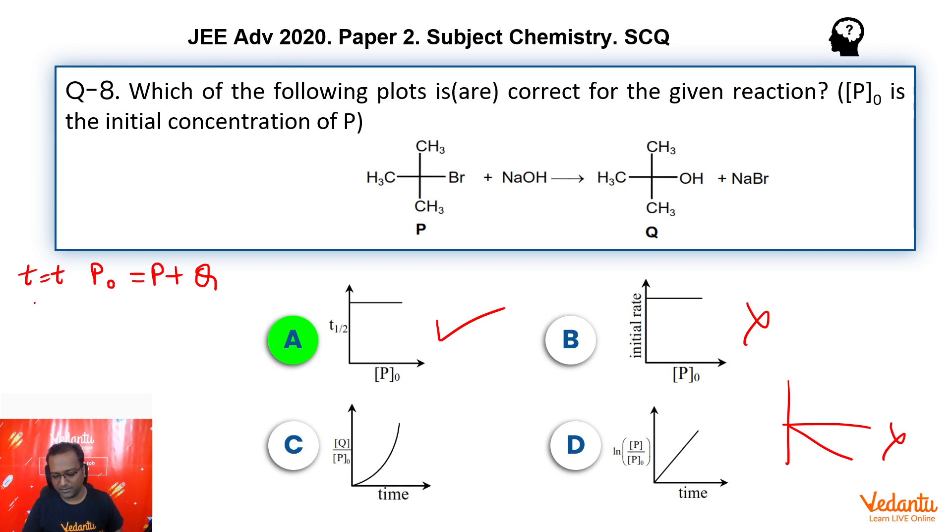So, from here, we can see guys, we wanted Q by P naught. So, Q by P naught will simply come out to be what? Will be 1 minus P by P naught. And abhi, abhi, hamne padha tha, P by P naught for a first order reaction is E to power minus KT. This becomes 1 minus E to power minus KT.